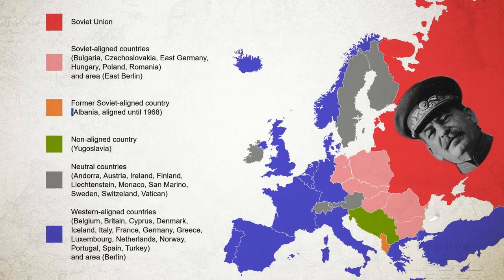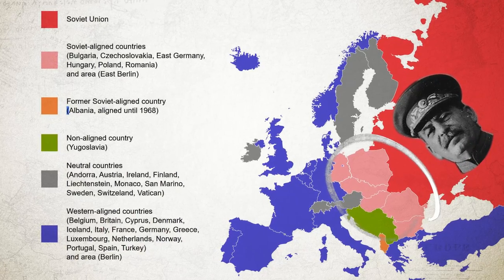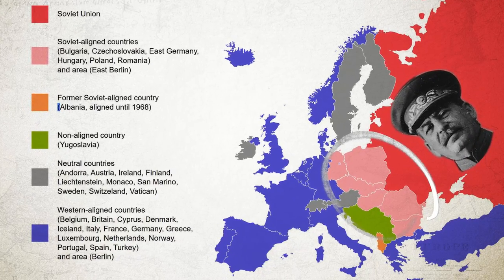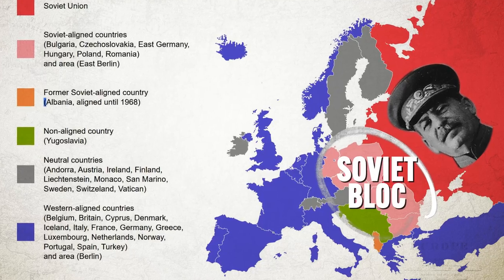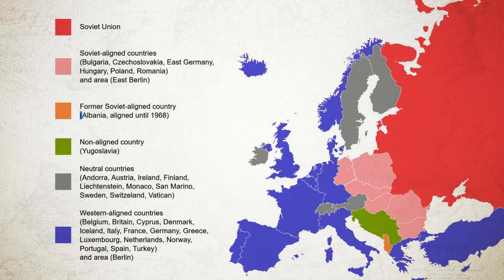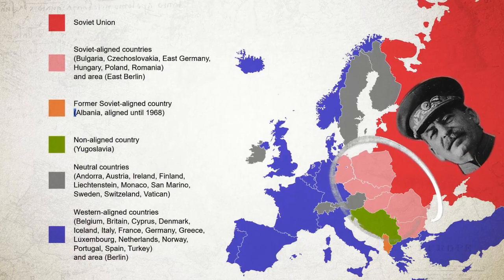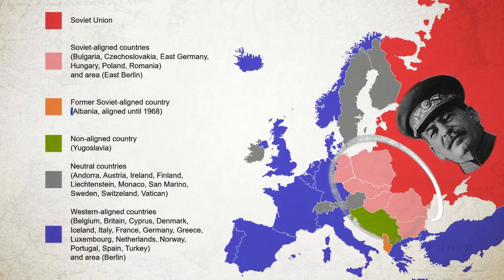Despite the establishment of the United Nations, it couldn't keep the Cold War from happening. After the war, Stalin decided those Eastern European nations were not really ready for self-determination. Instead, the Soviet Union absorbed them into what became known as the Soviet Bloc. These satellite nations became communist and their economies were made to serve the Soviet Union, directly violating the Big Three's agreement on democratic elections.